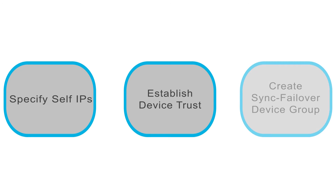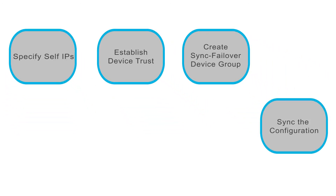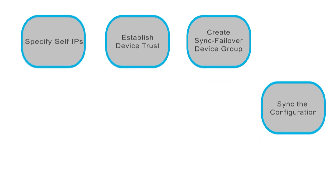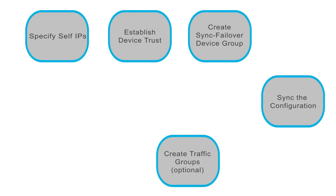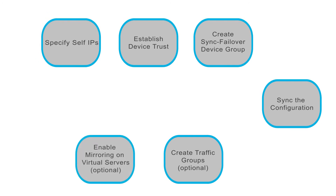This is a prerequisite to all other DSC operations. Third, you must create a sync failover device group containing up to eight devices. Next, from one device you sync its configurations to the other devices. If you plan on a device group handling multiple application flows, you might want to create additional floating traffic groups beyond the default one. And if you want a device to mirror its connections to another device, you can enable connection mirroring on the relevant virtual server.